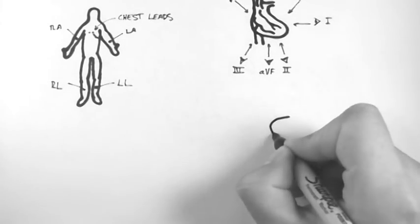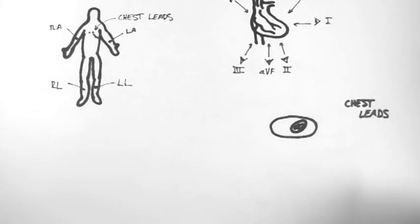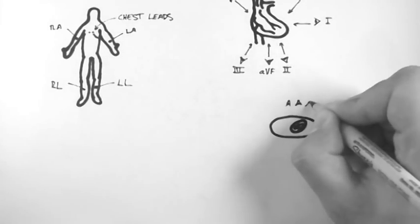The chest leads look at the heart in a transverse plane. So again, these work like little eyes that each look at the heart from a different angle.